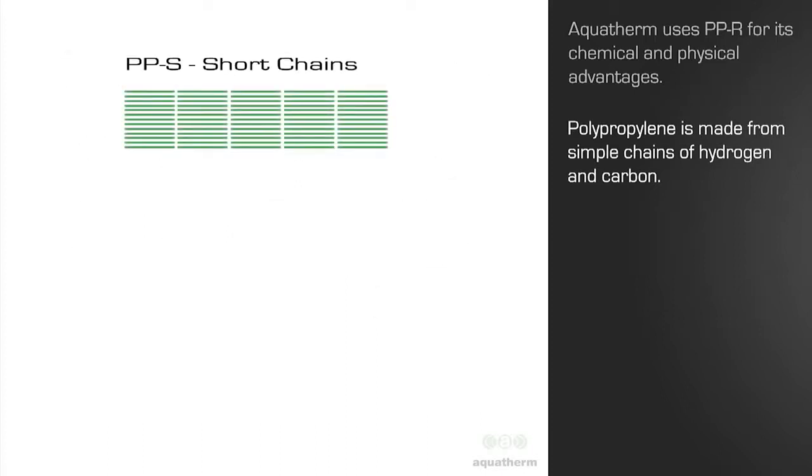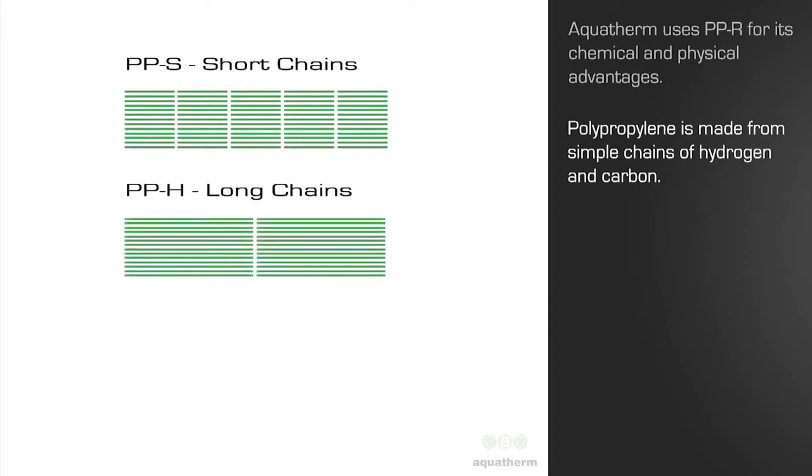Using short chains makes the polypropylene flexible, like you'd see in lab tubing. Using long chains makes the polypropylene rigid, like you'd see in high purity or acid waste systems.